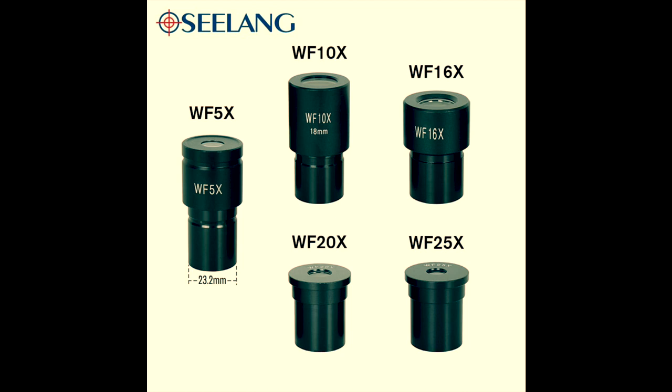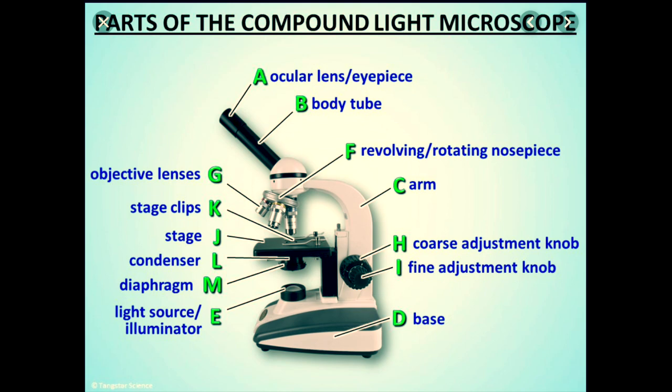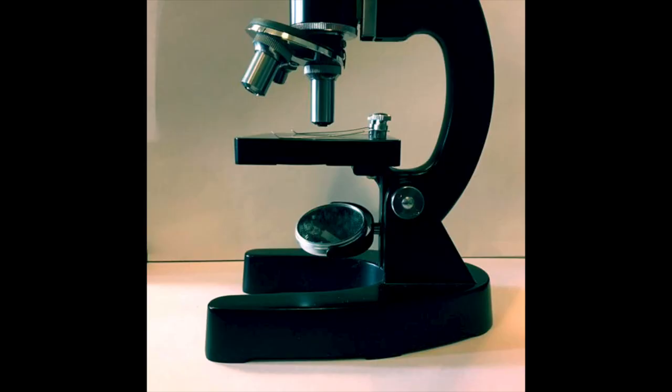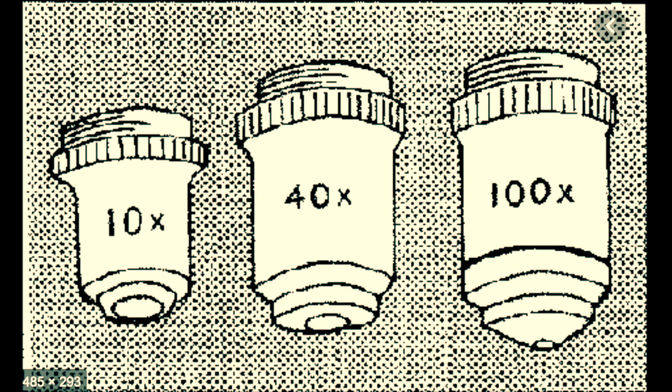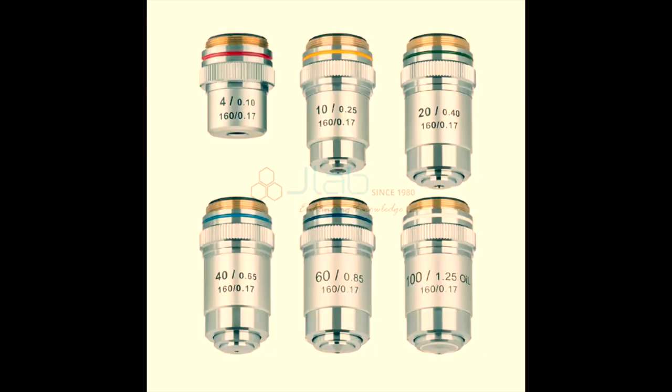Moving on to the nose piece which holds the objective lenses. This is how the nose piece looks like and the objective lenses attached to it. These objective lenses are of majorly 3 powers, 10, 40 and 100x but may also have other powers like 60 and 20x.